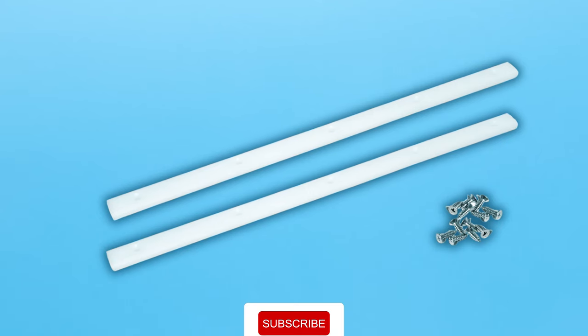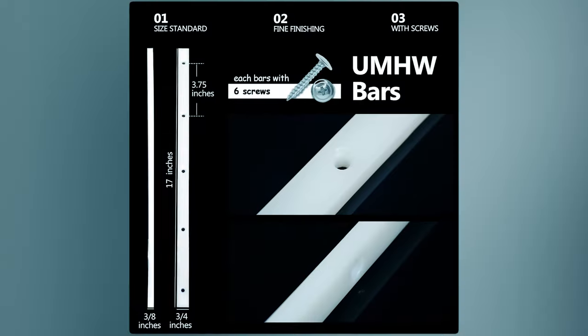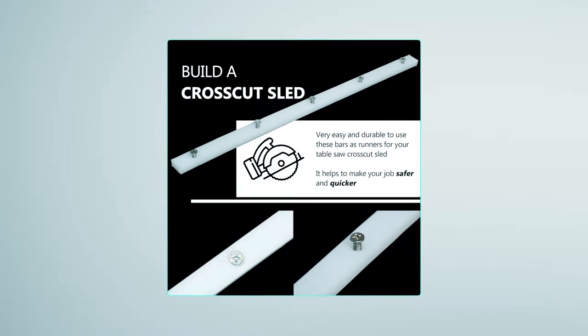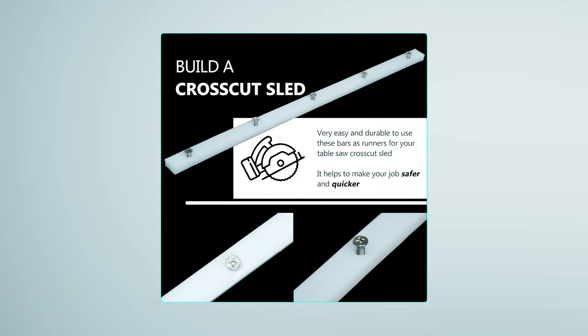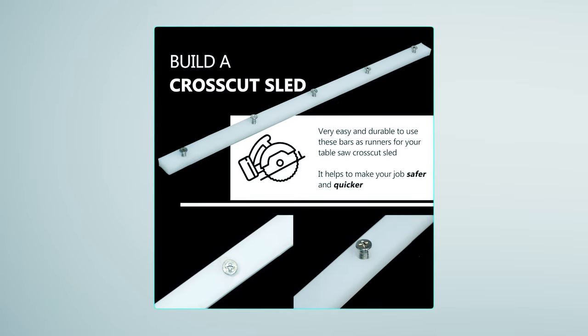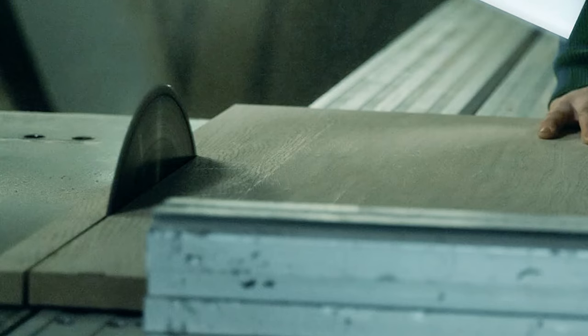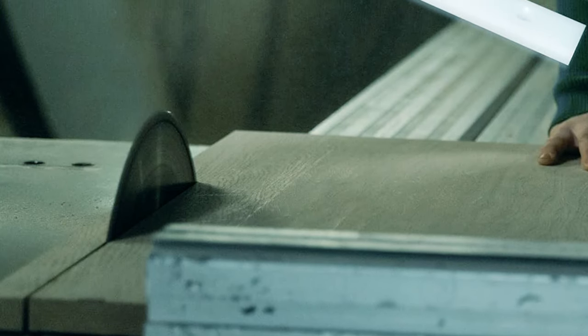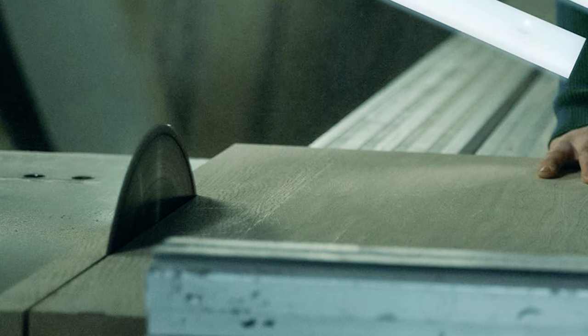Say goodbye to worries about temperature-related expansion and contraction, as UHMW remains stable under extreme conditions. The crosscut sled bars fit most standard table saw slots and can be easily spliced together for added length. Whether you need small cuts, cross cuts, or repeat length cuts, this sled will improve your woodworking efficiency and precision.